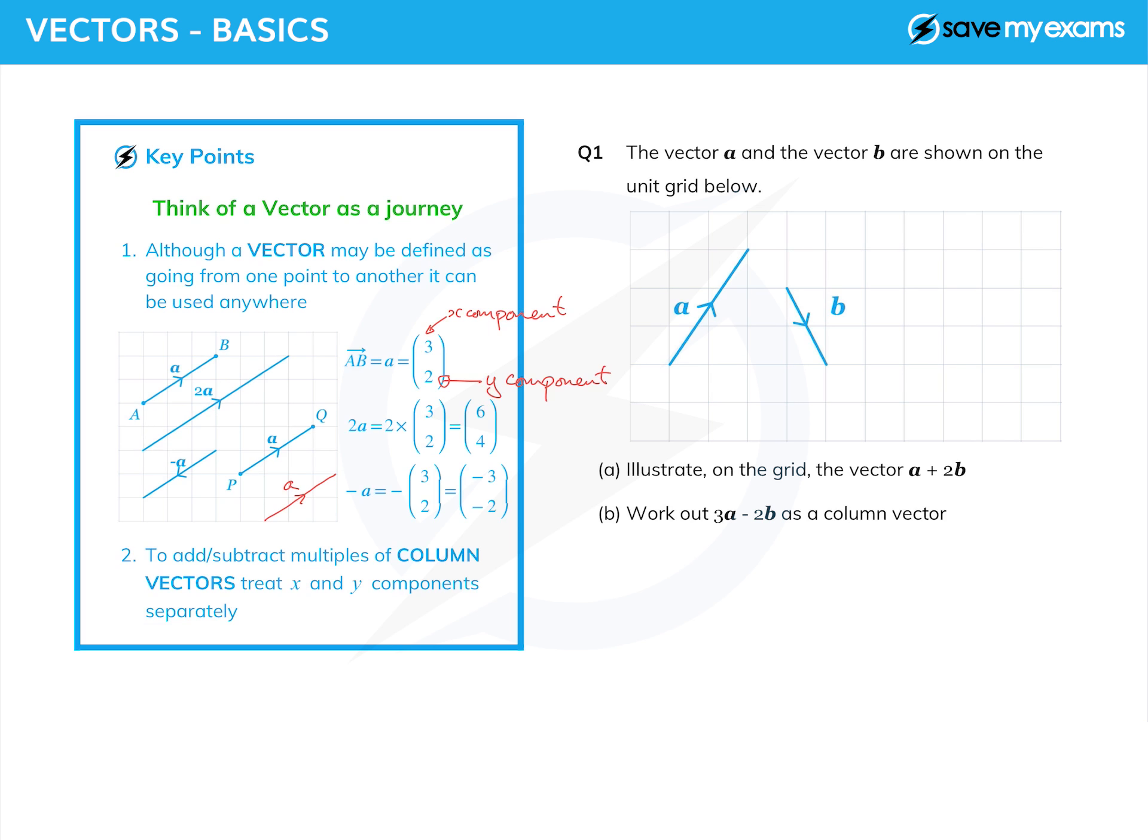And you can see it is indeed six across and four up. And minus a—well, the minus sign goes in front of the column vector, and then you do the minus sign to each of the things, so we get (-3, -2). And if you look at that on the diagram...